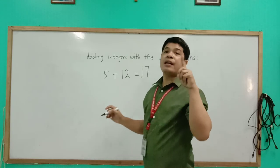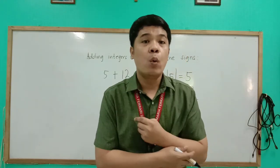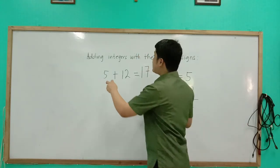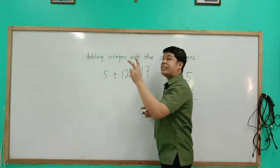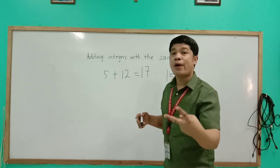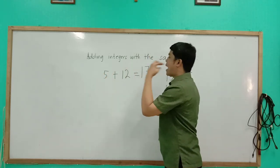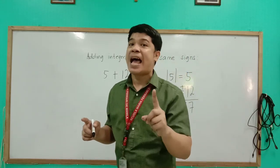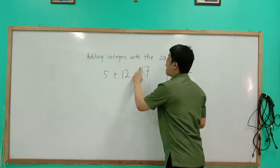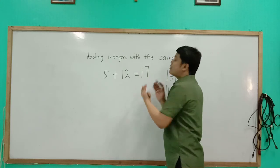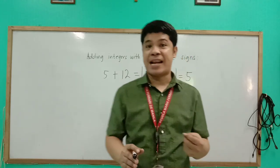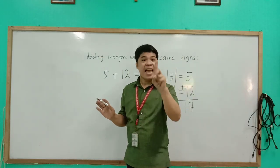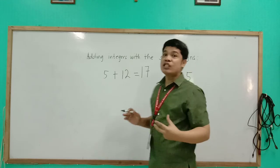According to the rule, we are going to use the sign from the problem. The signs of the two integers are both positive — positive 5 and positive 12. So therefore, our final answer is also positive. So positive 17 is our final answer.